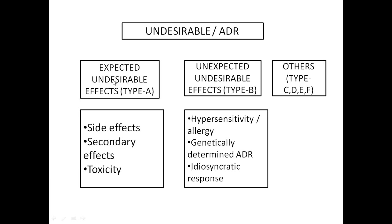Type A stands for augmented effect — expected undesirable effects. Type B stands for bizarre effect — unexpected undesirable effects. Under Type A, there are three categories: side effect, secondary effect, and toxicity. Under Type B, there are unexpected effects like hypersensitivity or allergy, genetically determined adverse drug reactions, and idiosyncratic responses. We will discuss each one.